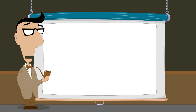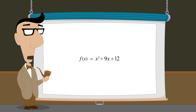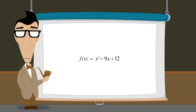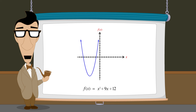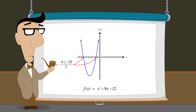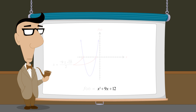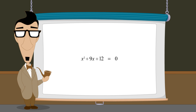In the lecture Factoring Quadratics by Inspection Part 1, we said that the quadratic function x-squared plus 9x plus 12 was not able to be factored by inspection. But as we saw in that lecture, the graph of this function crosses the x-axis at the two points x equals negative 9 plus or minus the square root of 33 over 2. So let's confirm this by setting this function equal to zero and solving that quadratic equation by completing the square.